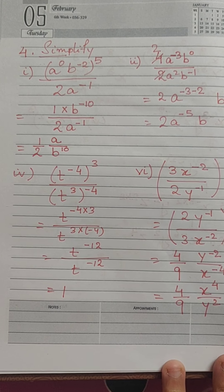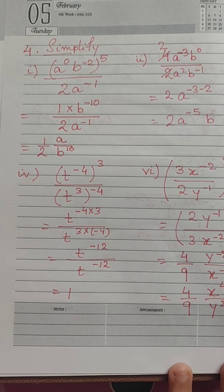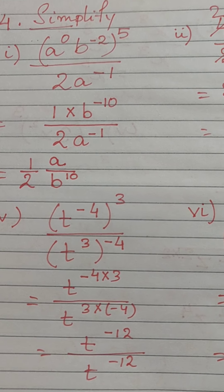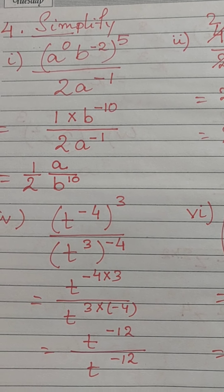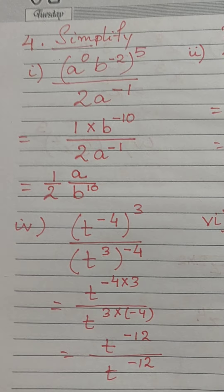Now, we will move to question number 4 where again we have to simplify. The first question is a to the power 0 b to the power minus 2 whole raised to the power 5 divided by 2 into a to the power minus 1.